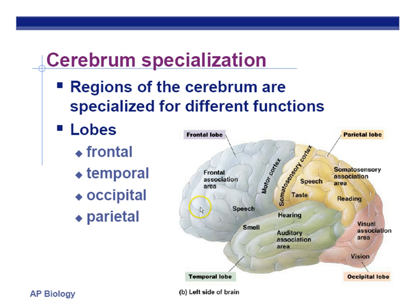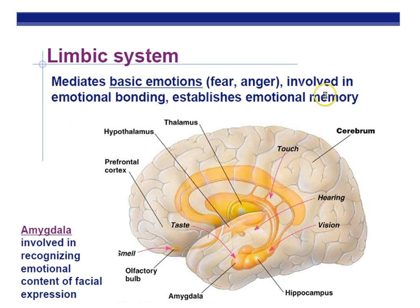The temporal lobe is on the sides near your ears and is involved with hearing. The occipital lobe is toward the back of the brain and is involved with vision — the nerves travel all the way back there to process the image, which also gets flipped right-side up. The parietal lobe is on the top and is involved with speech, taste, reading, and some other functions. The amygdala is involved with the emotional content of facial expressions and serves as the fear-processing center of the brain.